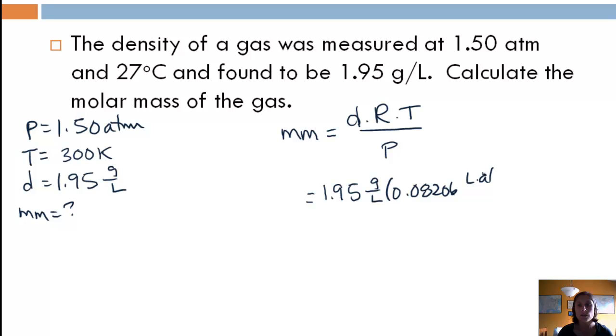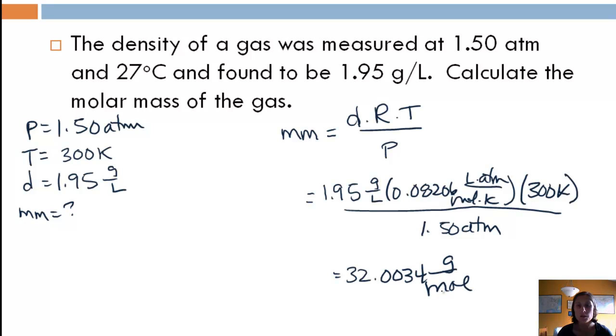Okay, 0.08206 liter atmospheres per mole Kelvin. Again, make sure your units are all okay. So, temperature in Kelvin, pressure in atmospheres, volume in liters. And then pressure is 1.50 atmospheres. If we divide all that out, I already did it for you, we end up with 32.0034 grams per mole.